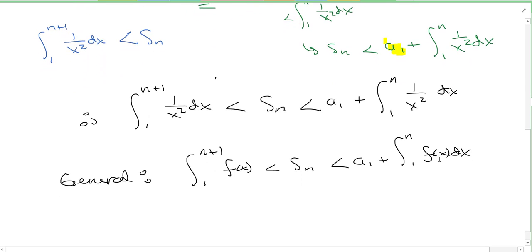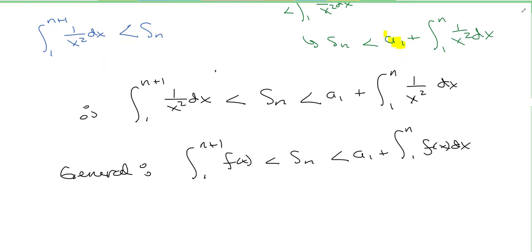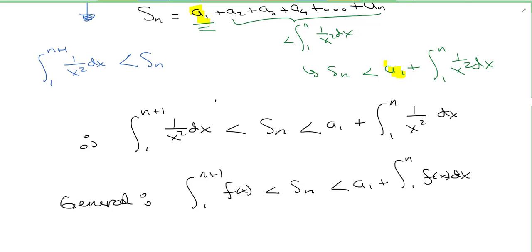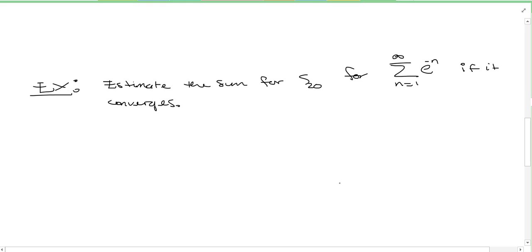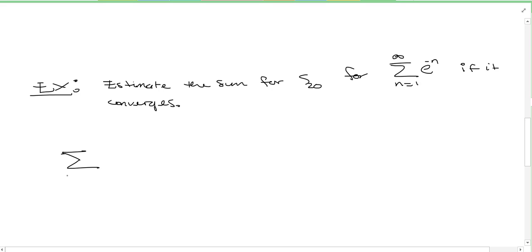So let's try a different example than the one we did in class. Estimate the sum S20 for the series of e to the minus n, if it converges. First, determine if the series converges. For practice, we're going to use the integral test — I know we can use the geometric series test, but let's practice the integral test.